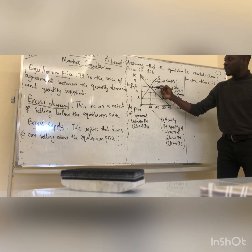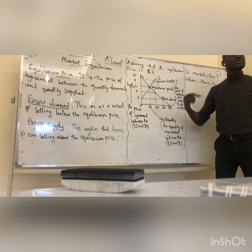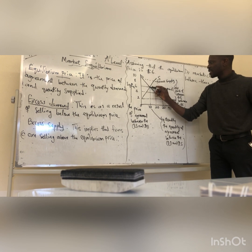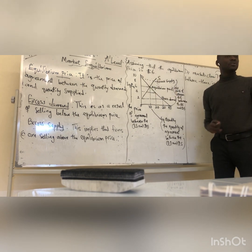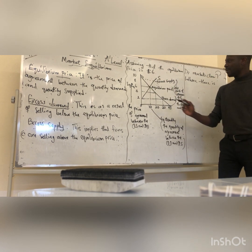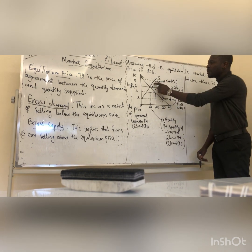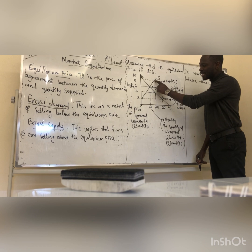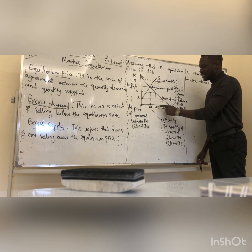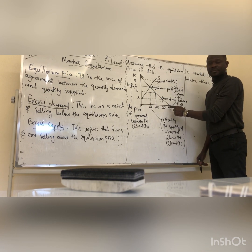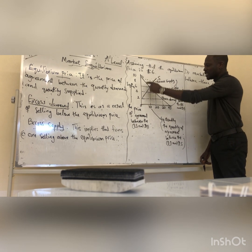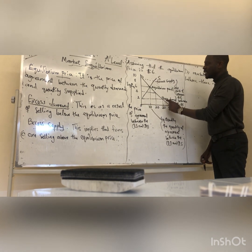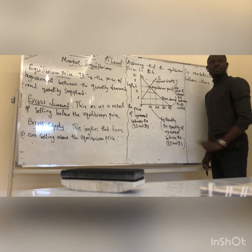When you sell above the equilibrium price, you have excess supply. So at that point, supply is more than demand. At the other point, demand is more than supply.